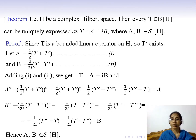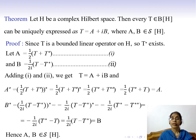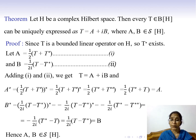The third theorem states: let H be a complex Hilbert space. Then every bounded linear operator T on H can be uniquely expressed as T = A + iB, where A and B are self-adjoint operators on H. To prove this, let A = (1/2)(T + T*) and B = (1/2i)(T − T*). Adding these gives T = A + iB. We now show A and B are self-adjoint.